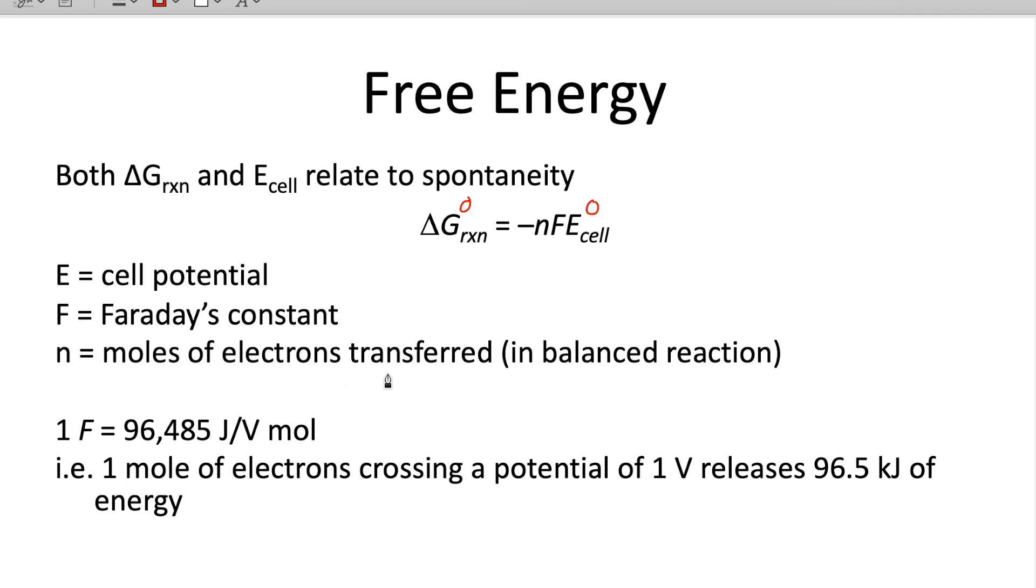n here is the number of moles of electrons transferred. This isn't a balanced reaction, but also it's hidden because you remember those electrons cancel out. So you kind of have to look at the half reactions to find the moles of electrons that get transferred. In our experiment today, everything is either gaining or losing two electrons. So that makes it easy for us, but you have to pay attention to that for other different kinds of reactions you might see. And then we have Faraday's constant. This is 96,485 joules per volt mole. In other words, one mole of electrons crossing a potential of one volt will release 96.5 kilojoules of energy.